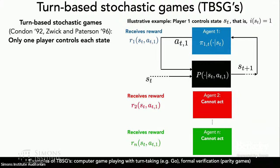What this means is that now at a given round, only one agent is active and only one agent can take an action. This is an illustrative example of a turn-based stochastic game, also called TBSG, where at state s_t, only player one is able to control that state. Just as before, all of the players will receive a reward. In general, the reward functions can be completely heterogeneous and different for all agents. But the key difference is that only a single agent is taking an action, and that single action dictates both the instantaneous rewards and the transition to the next time step. TBSGs are pretty common in the setting of multi-agent RL.